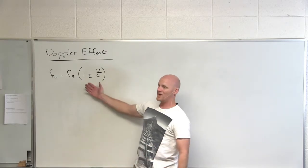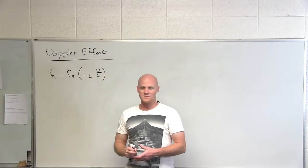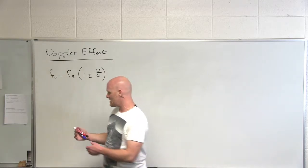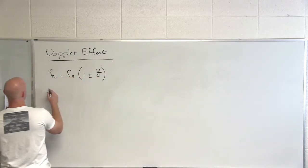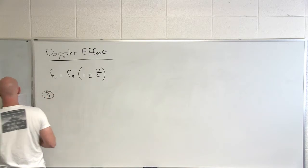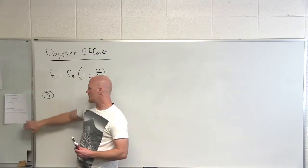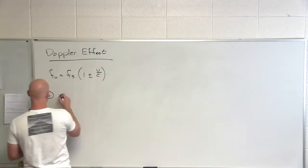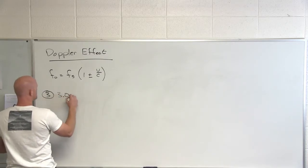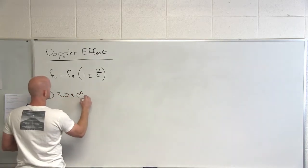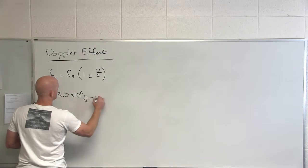And so in this case, this is what we use to look at stars and stuff like that. So if you look at question number three, if a star is moving away from the earth with a velocity of 3.0 times 10 to the sixth meters per second, that's u.